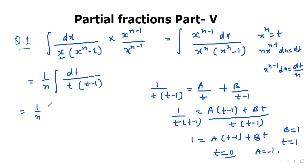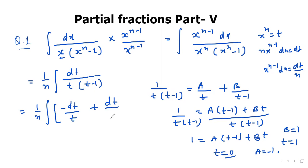It will become 1 upon n times the integration. We put brackets and write the values of a and b: minus dt upon t plus dt upon t minus 1.